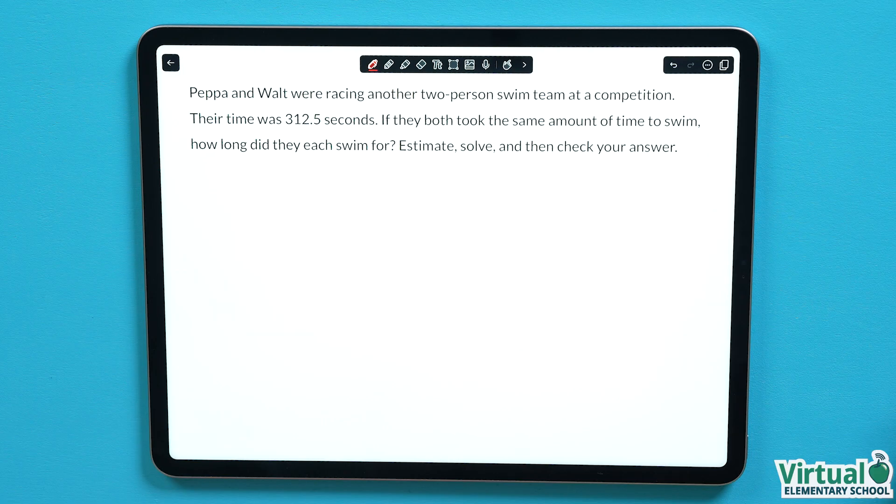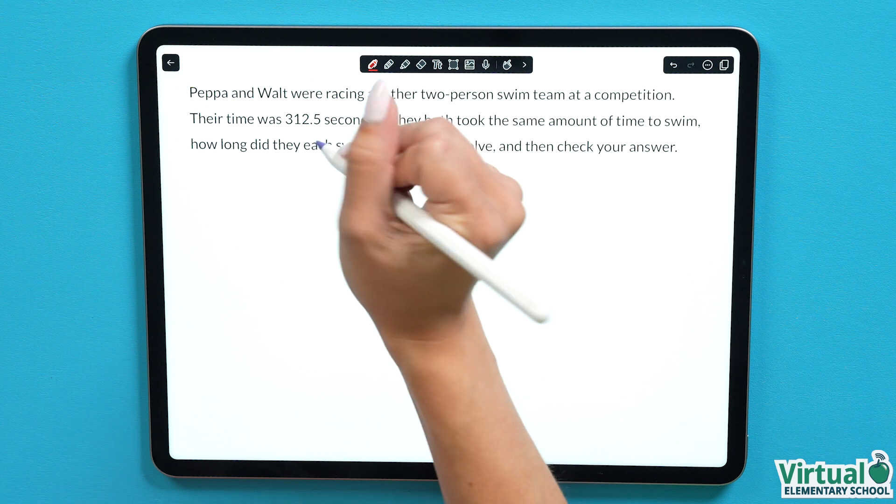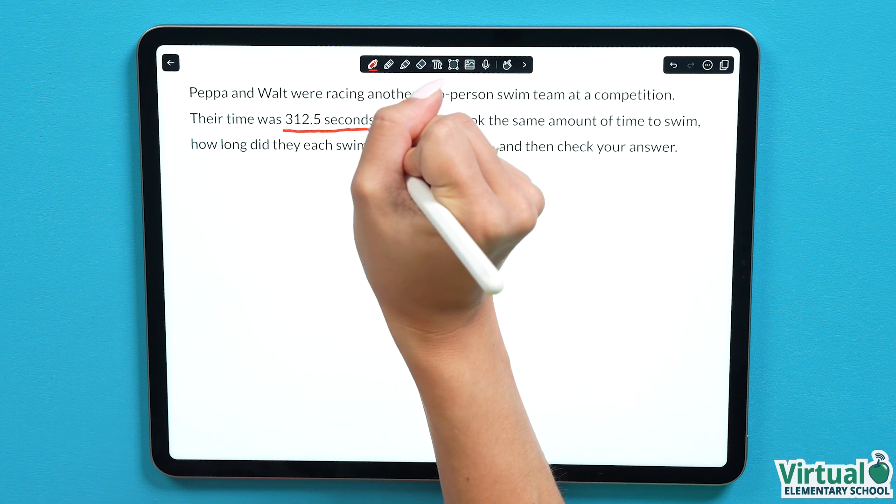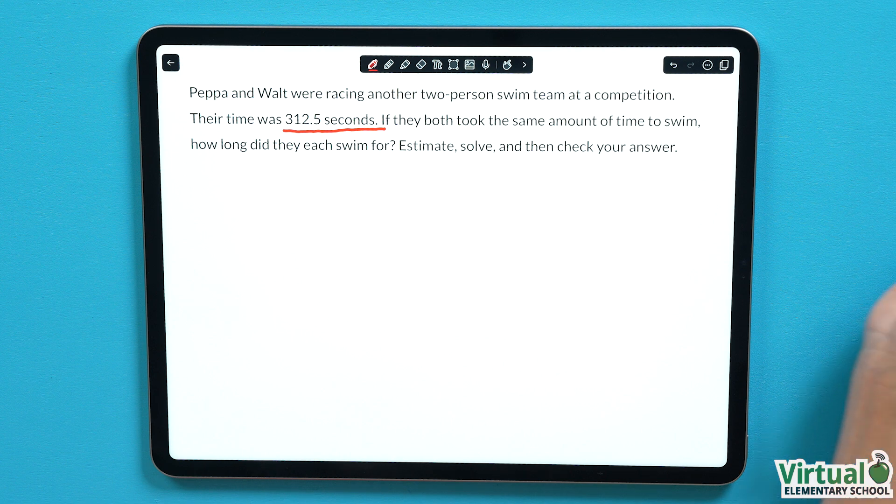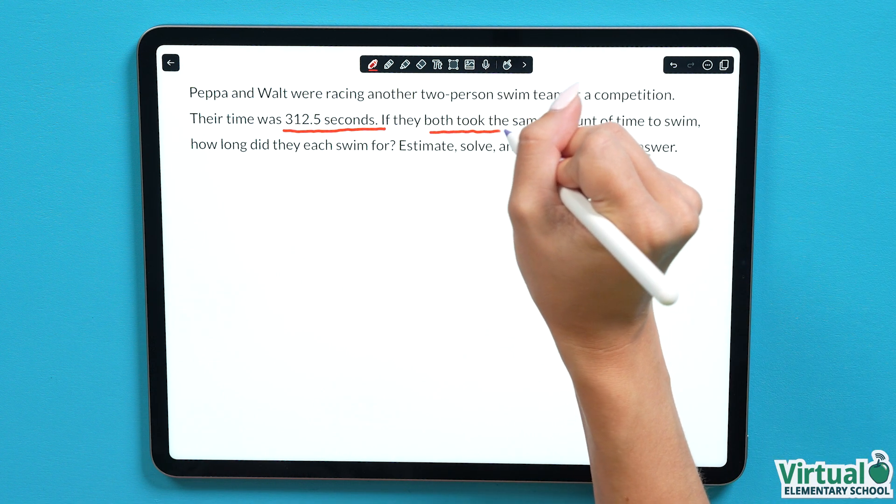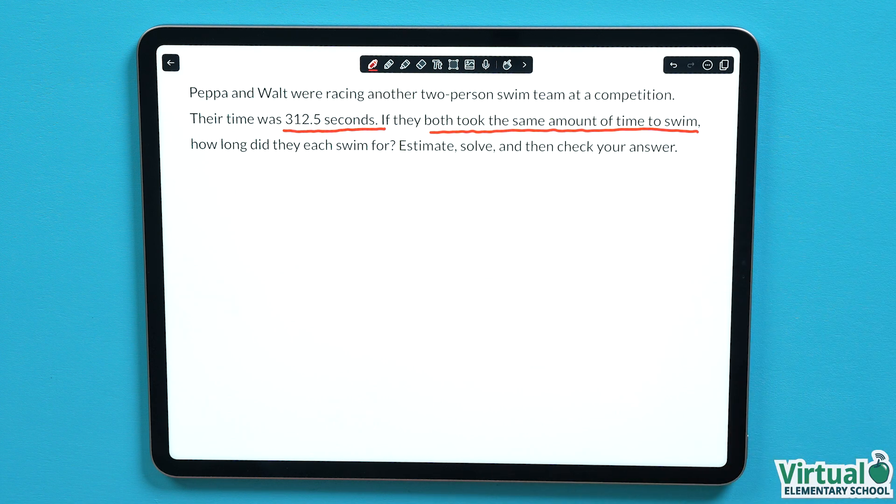Estimate, solve, and then check your answer. Looking at our question, we see that the important numbers are 312.5 seconds, which is the total amount of time they swam for, and we need to consider if they both swam for the same amount of time, which would be 2.